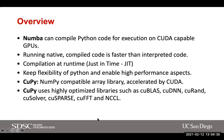Numba can compile Python code for execution on CUDA-capable devices. It runs native compiled code, which is faster than the interpreted approach that Python has. The compilation is done at runtime — it's just-in-time compilation. This lets you keep the flexibility of Python while still keeping the high-performance aspect of the backend GPU.